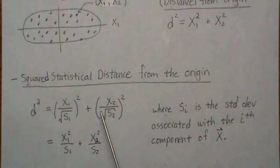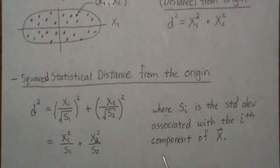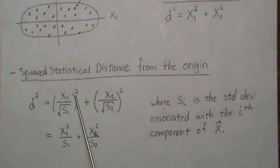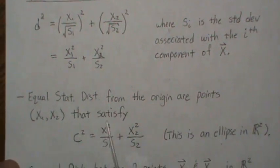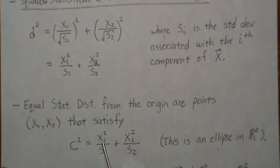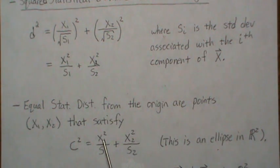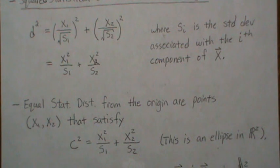So what it's trying to do is put X1 and X2 on a more similar playing field, as far as extreme values in either way would then be similar. So if we wanted to find the equal statistical distance from the origin, then we'd have to find all the points that satisfy this formula here. And so if a data point, which has two components, one and two, and this is for any C squared, then they're equal distance from the origin. And this creates an ellipse in R2 space.